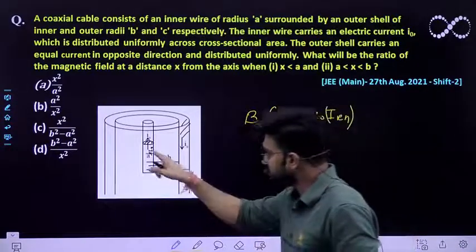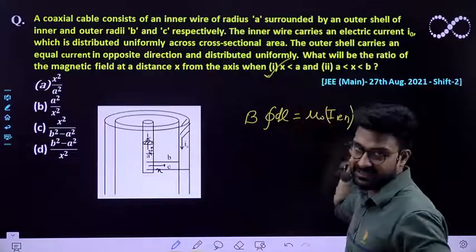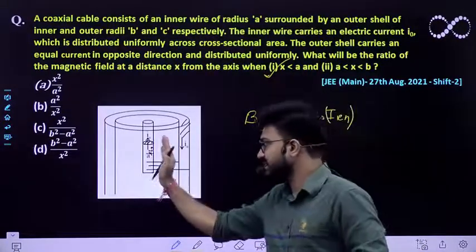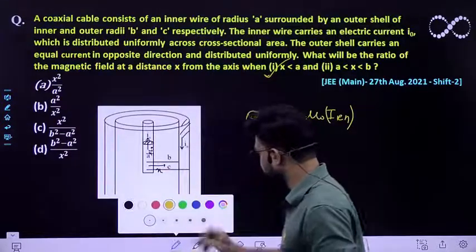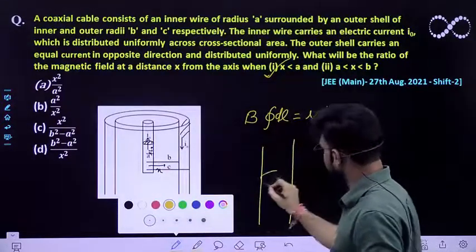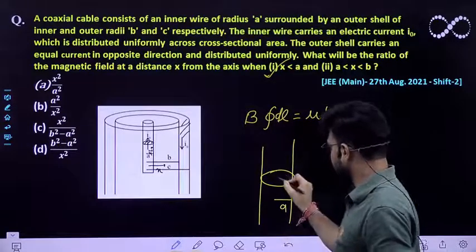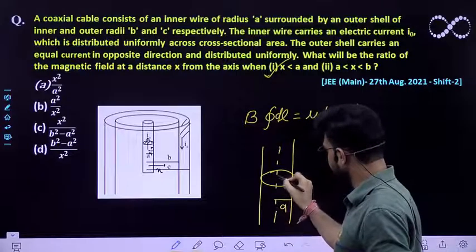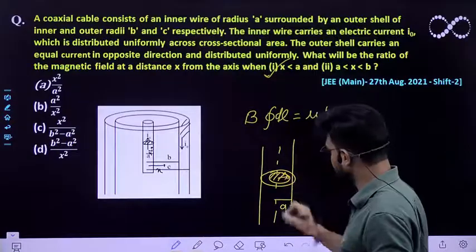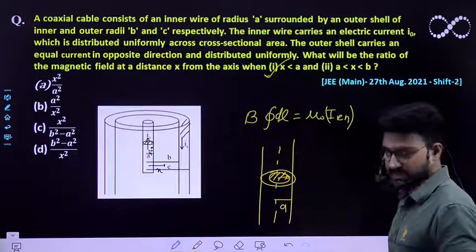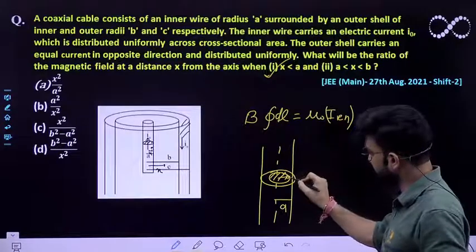In the first case we will be doing this question in which x is less than A. When x is less than A, this much area has been enclosed. If I will redraw it, this is area and this is A and you are moving at a distance of x from it. So this is the area which has been enclosed by this line integral.